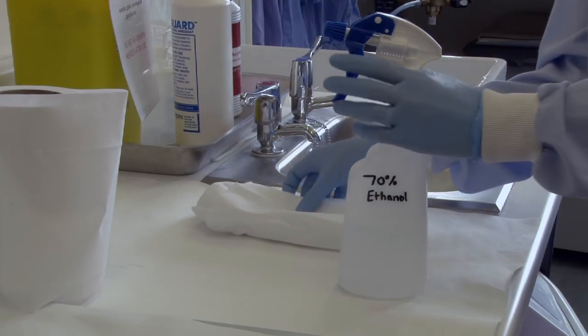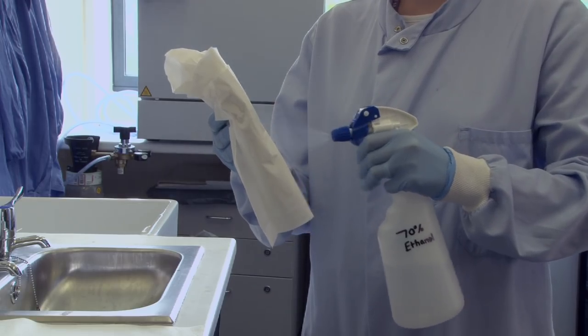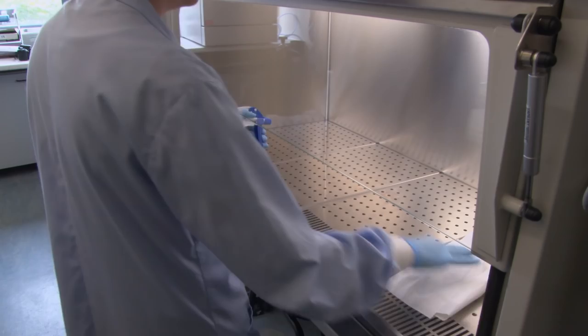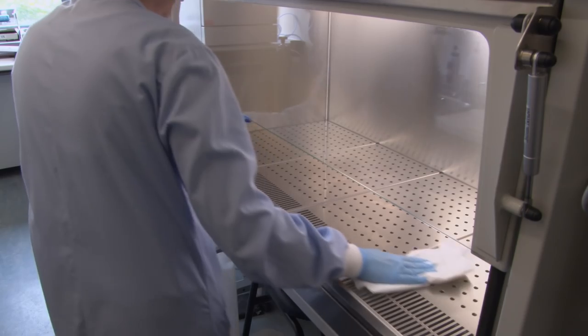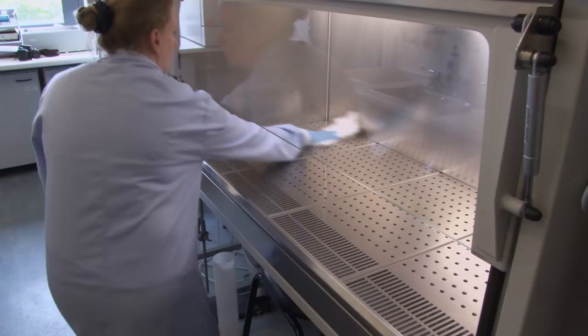To clean the cabinet we use 70% ethanol which is a very safe surface disinfectant. Spray generously onto the cleaning paper and disinfect all the inside surfaces of the cabinet. Make sure all of the surfaces are cleaned and ensure you work into the corners.